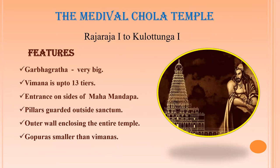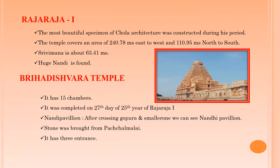The medieval Chola temple period spans from Raja Raja I to Kulottunga Chola I. Maturity of experience and a high degree of excellence and perfection were reached in this period. Main features include: the Garbhagriha became very large; the majestic Vimana reached up to 13 tiers; entrances were provided on the sides of the Mandapa; pillars are provided outside the Mandapa; subsidiary shrines are found in large numbers; and there is a huge outer wall enclosing the entire temple. However, Gopuras are smaller than the Vimanas. With the accession of Raja Raja I, the Chola empire witnessed glory and grace for 200 years in all fields. His rule formed a new chapter in the history of the development of art and architecture.